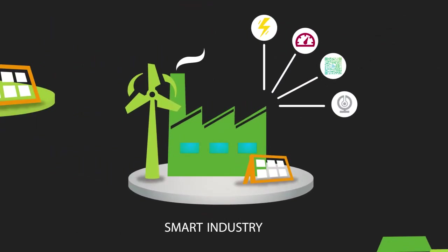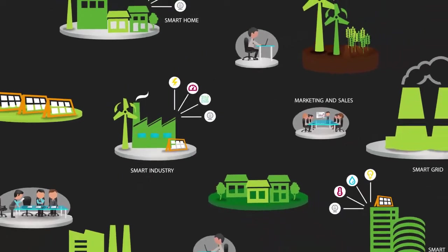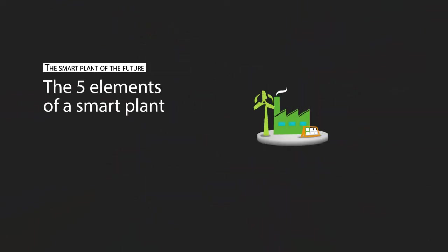The new model is horizontal and the plant of the future smarter and more agile than today's plants. So what will the plant of the future look like?